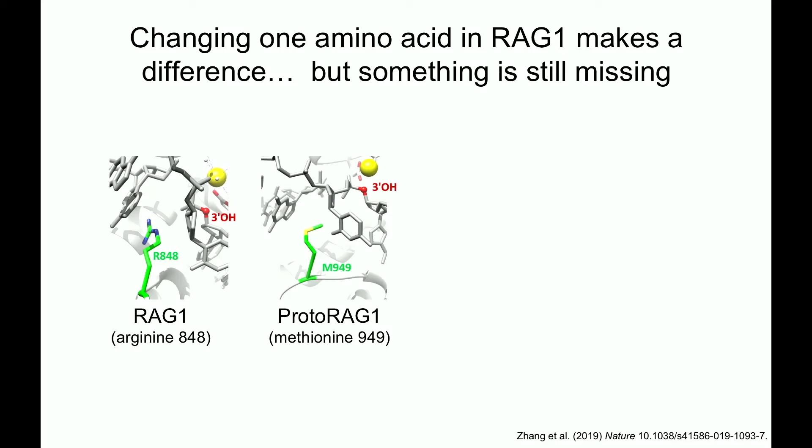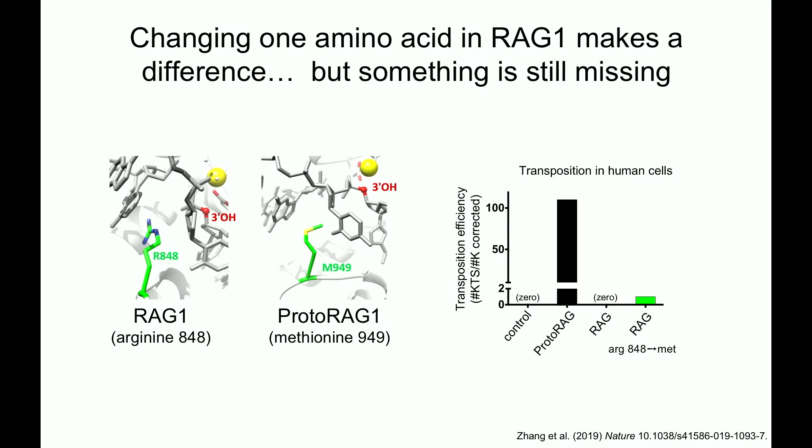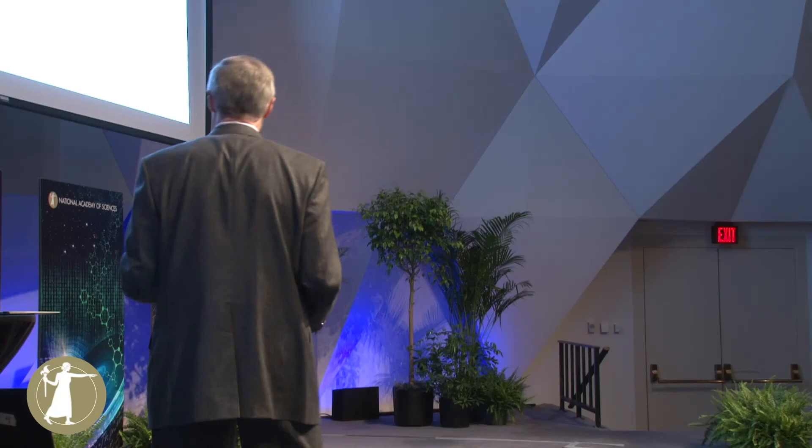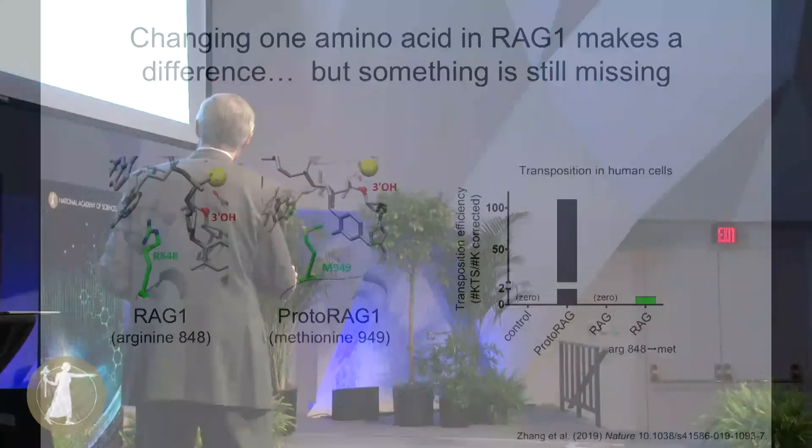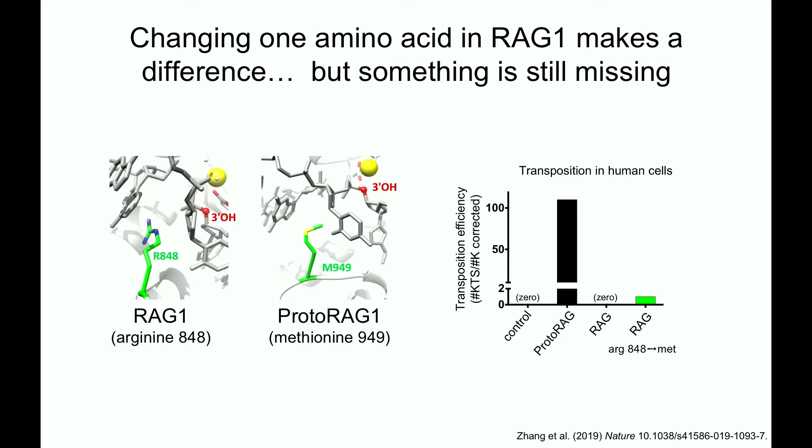Yu Hong did a very simple experiment: he changed the arginine in RAG1 to a methionine and repeated the assay for transposition. The data showed proto-RAG active, RAG dead, and the mutant — for the first time we could reproducibly detect transposition inside human cells. We were excited but also a little disappointed, because this mutant was about a hundred-fold less active than proto-RAG. So we were clearly missing something.